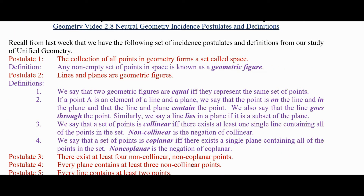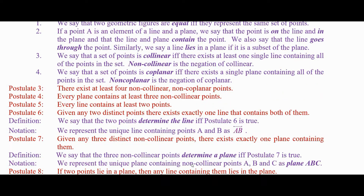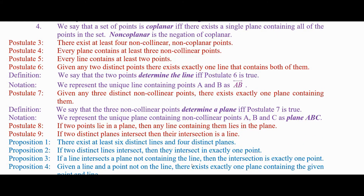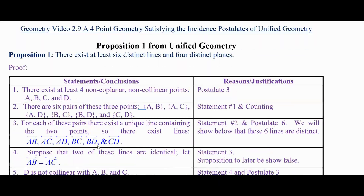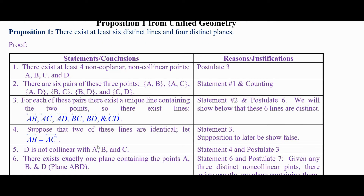From the last video, I went back over these things, and you can see the list of nine postulates that we have. Notice Postulate 3 says we start with the existence of four non-collinear, non-coplanar points. From that, and the combination of these other postulates, we're going to be able to prove that we get six lines and four planes.